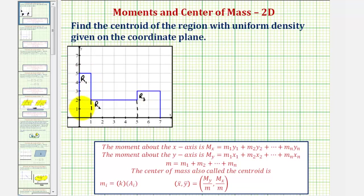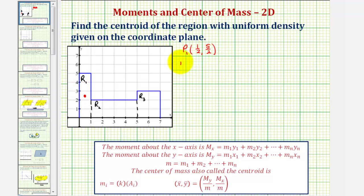Because each rectangular region has uniform density, the center of mass would be halfway up and halfway across each rectangle. Going halfway up and halfway across rectangle one, we'd be at the centroid of this first rectangular region. The coordinates would be one-half comma five-halves, so p sub one is (1/2, 5/2). The mass m sub one equals the area times the density k, and since the area is five square units, m sub one is 5k.